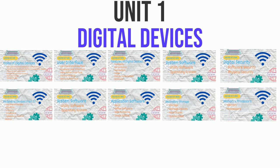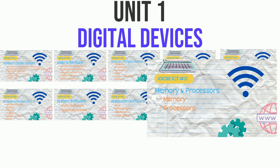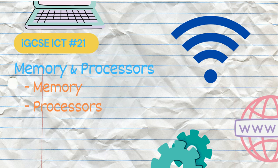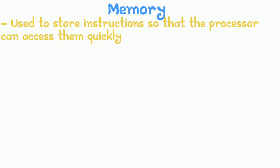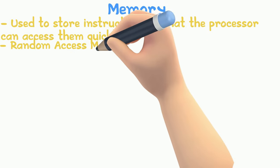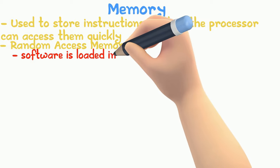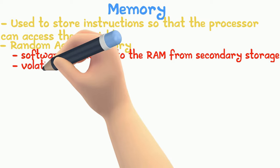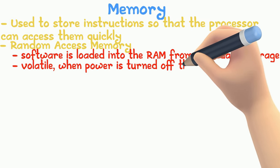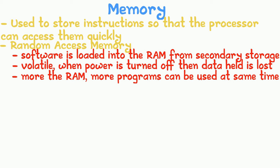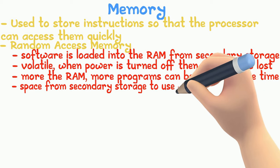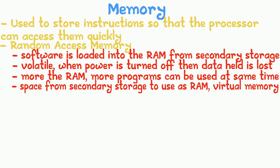Another request from Unit 1 was the RAM and ROM section. Memory is used to store instructions so that the processor can fetch them quickly. Random Access Memory (RAM): software is loaded into RAM from secondary storage. RAM is volatile, so when power is turned off all data is lost. The more RAM available, the more programs can be opened simultaneously. If RAM is full, the system uses secondary storage as RAM — known as virtual memory — which slows down the computer.